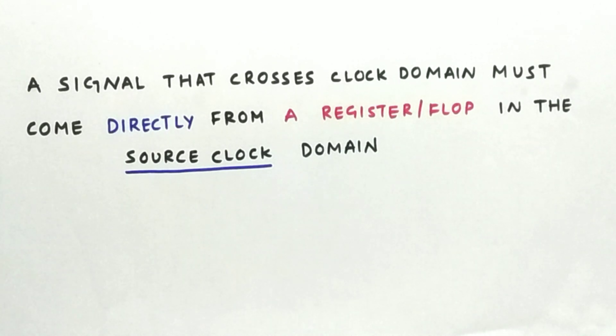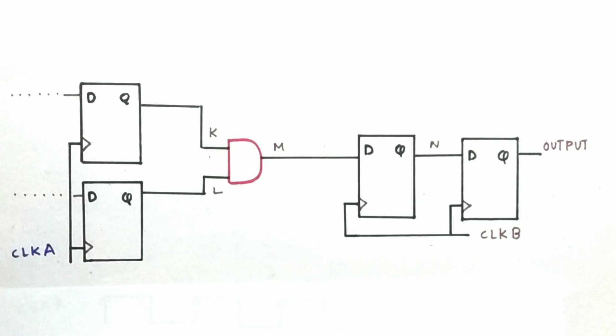So let us take a scenario where a signal is crossing the clock domains but through a combinational logic. In this scenario, as you can see, we have two clock domains clock A and clock B. A signal is being sent from clock A domain to clock B domain through a combinational logic here, that is AND gate.